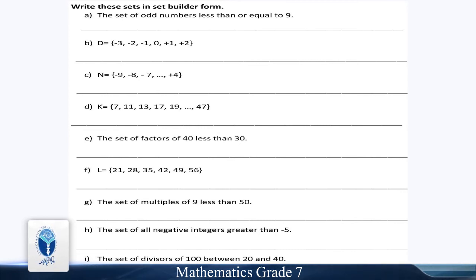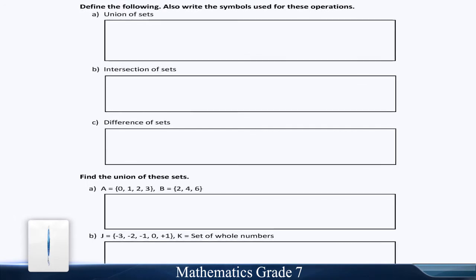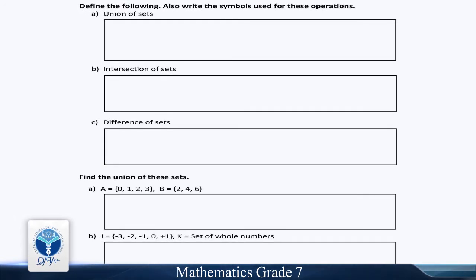Part H: The sets of all negative integers greater than minus 5. Part I: The sets of all divisors of 100 between 20 and 40. Operations on sets. Define the following. Also write the symbols used for these operations.